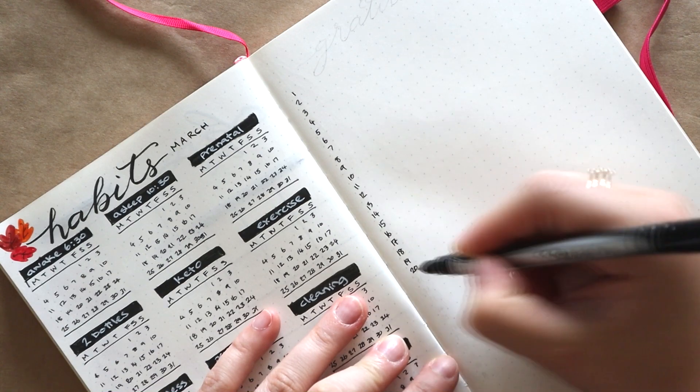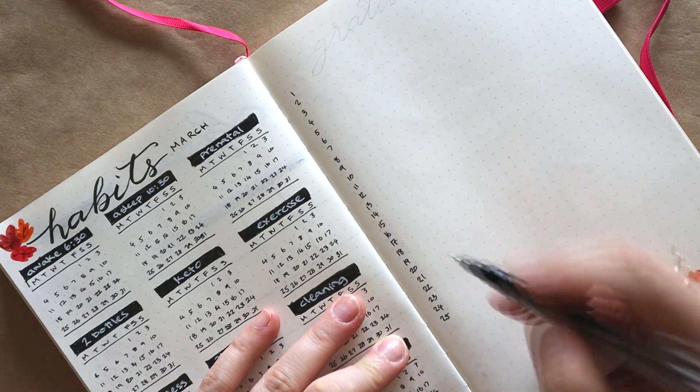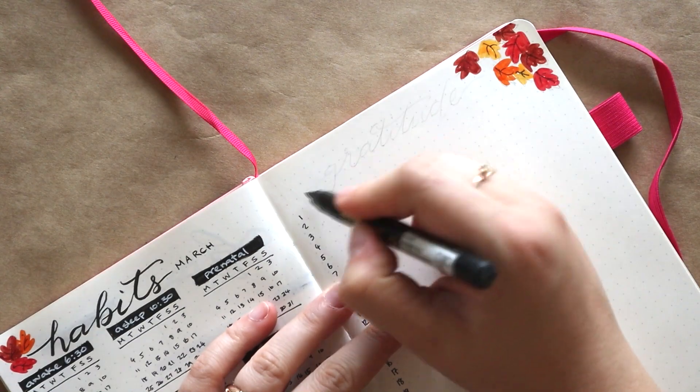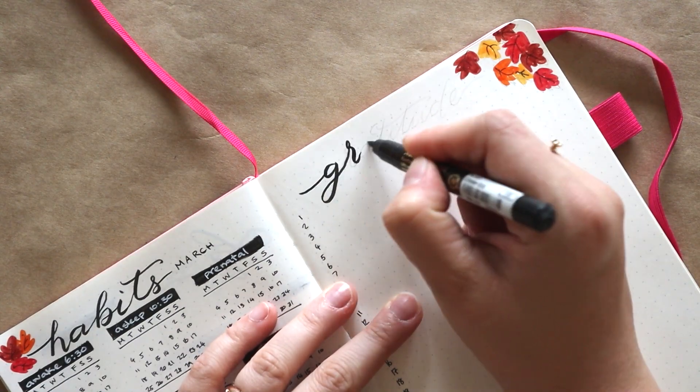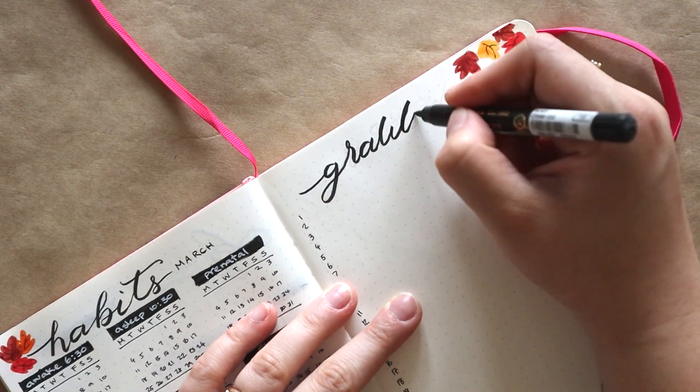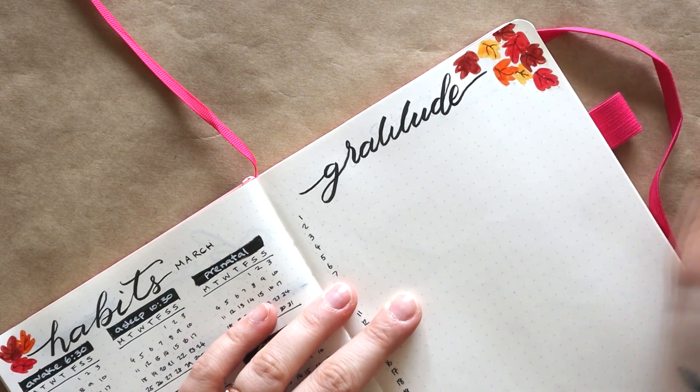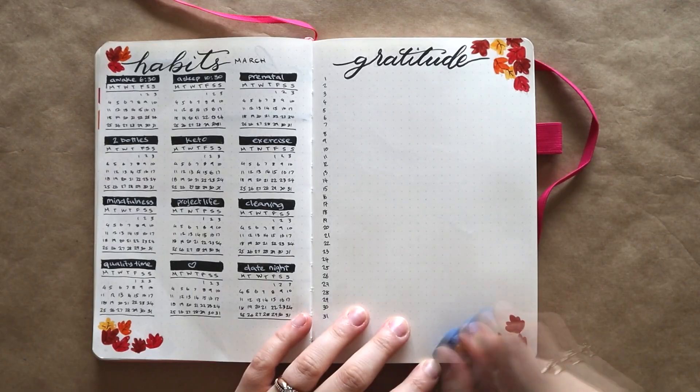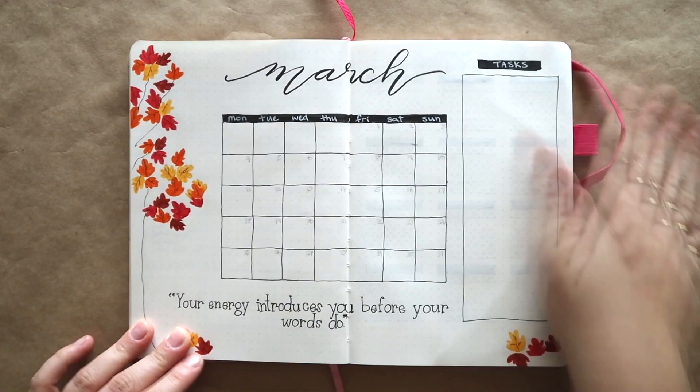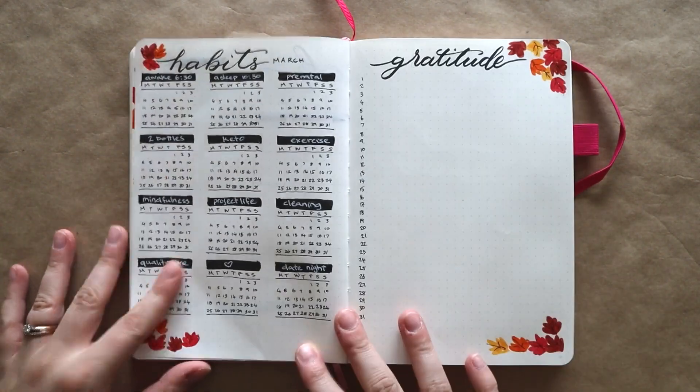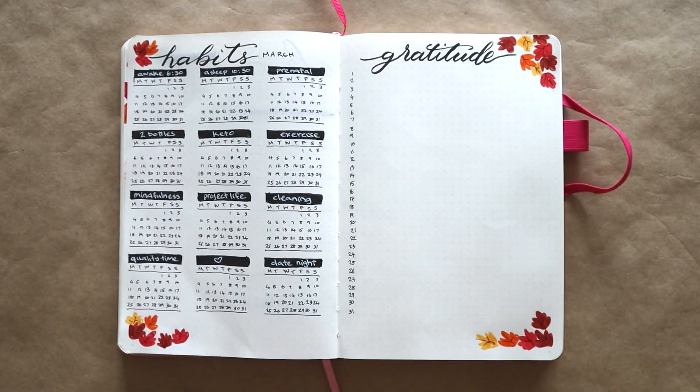I usually just typically write down one, maybe two maximum things that I'm grateful for, depending on how detailed I am with the explanation. There you go, this is my monthly setup for March 2019. I hope you enjoyed. Thank you so much for watching, and I'll see you again next time. Bye!